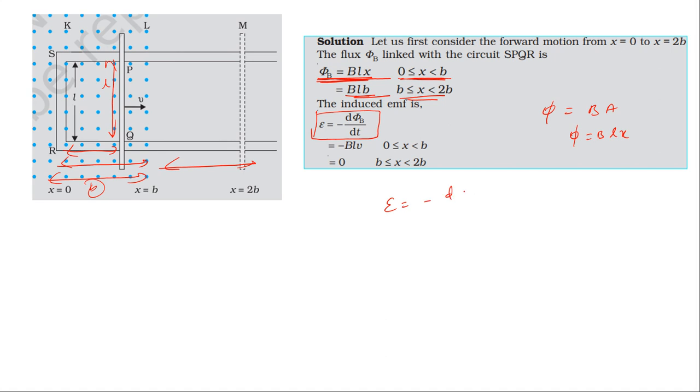EMF equals minus d(phi)/dt, which equals minus B times L times dx/dt. Since dx/dt is the velocity v, we get EMF equals minus BLv for 0 to b. When the flux changes, the EMF is BLv. From b to 2b, the flux is constant so EMF is zero.